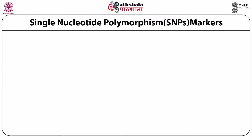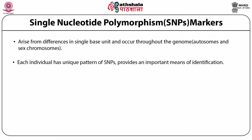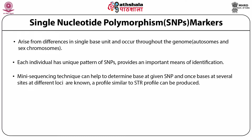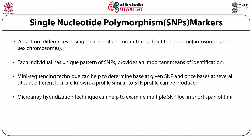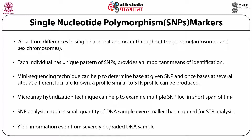Single nucleotide polymorphisms — SNPs — result from differences in a single base unit. They occur throughout the genome, including both autosomes and sex chromosomes. Every individual has a unique pattern of SNPs. Using mini-sequencing techniques, the base at a given SNP can be determined, and once the bases at several sites at different loci are known, profiles similar to STR profiles can be generated. Microarray hybridization technique helps to examine multiple SNP loci at the same time. SNP analysis requires only a small quantity of sample and can yield information even from degraded DNA samples.